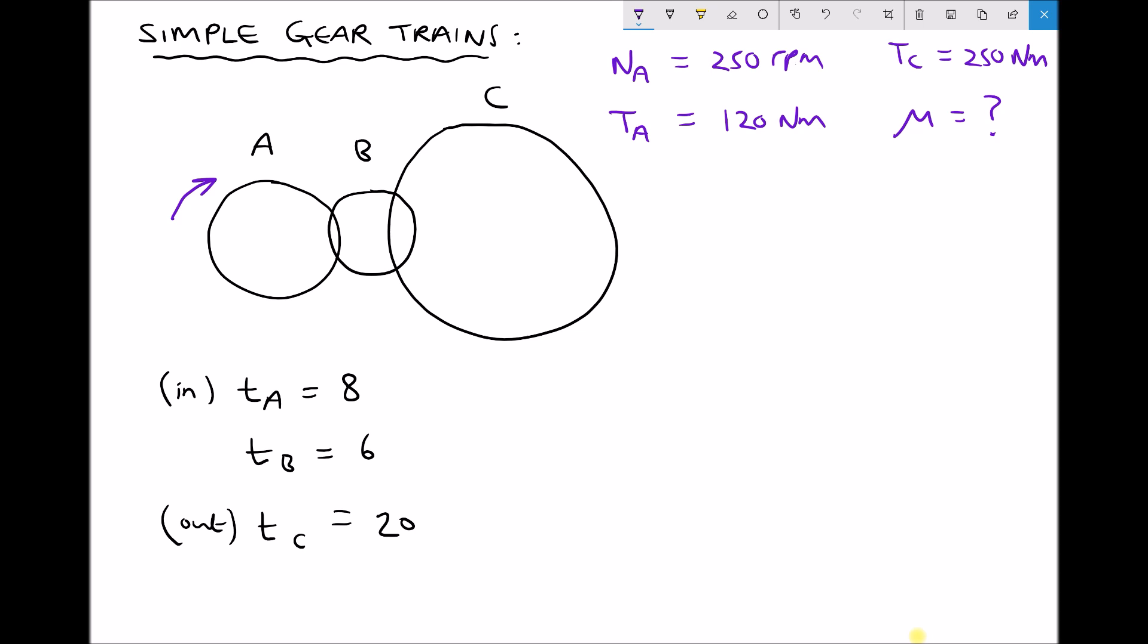Now the important thing here is that gear B has no impact on the gear ratio. It's called an idler gear and it makes no difference how many teeth are on that gear. What's important is the ratio of the output to the input as we saw in the earlier video. So I've specified here that gear B has six teeth, but in actual fact it makes no difference to the gear ratio for the gearbox.